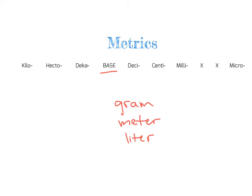We use grams when we are measuring the weight of something. If I was measuring the weight of a tube of chapstick, that's very lightweight, so we may choose to use grams. Even smaller than that, if I was measuring a sewing needle, I would add the prefix milli in front of gram — a milligram — which is a much smaller unit of weight. So if I was measuring that needle, I would probably use milligrams.